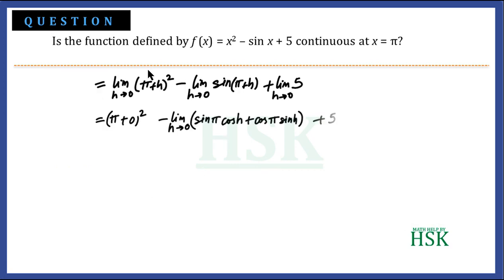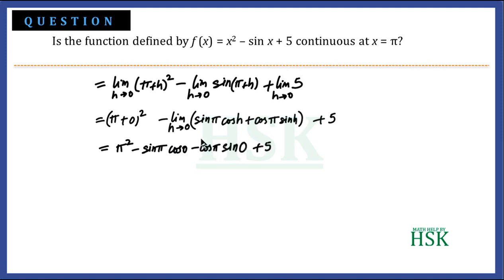Applying the limit to the first term gives (π + 0)² = π². For sin(π + h), we expand using sin(a + b) = sin a cos b + cos a sin b, giving sin π cos h + cos π sin h. The limit of h→0 of 5 is simply 5.